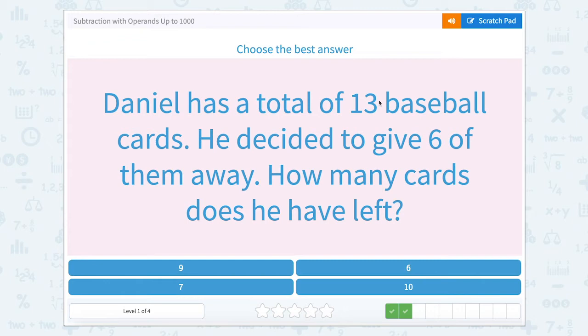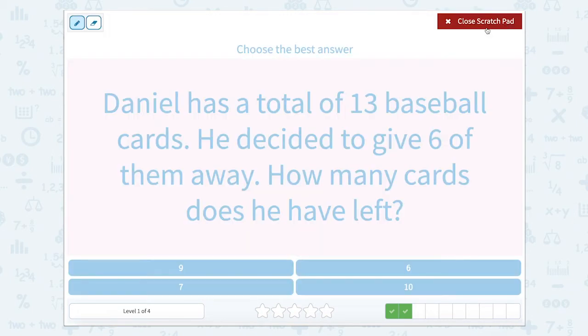Daniel has a total of 13 baseball cards. He decided to give six of them away. How many cards does he have left? Let's find Daniel's total right here. It says he has a total of 13. So he starts with 13 and then he gives away some of them, which he gives away six. So 13 minus six is equal to seven. So Daniel has seven baseball cards left.